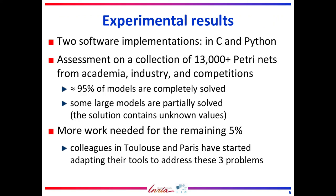We implemented our approach in two software tools, one in C and one in Python. We evaluated our implementation in C on more than 30,000 PetriNets. About 95% of models are completely solved, but some large models are partially solved only, meaning they have unknown values. Work remains to be done for the 5% remaining, but colleagues in Toulouse and Paris have started adapting their tools to attack these problems.